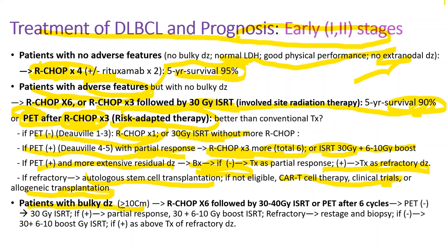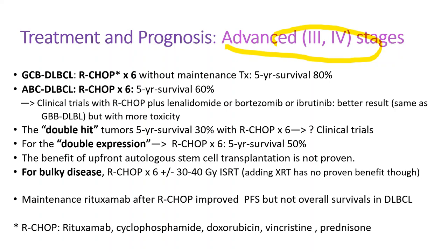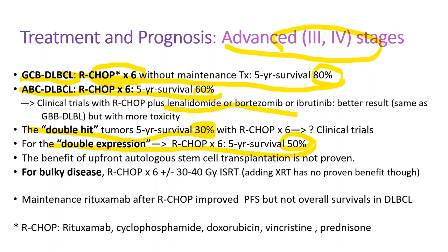For patients with bulky disease — tumor size over 10 cm — R-CHOP for six cycles followed by radiation therapy is used, or risk-adaptive therapy with PET assessment after six cycles. For advanced stages, R-CHOP for six cycles is the standard. Prognosis differs by subtype: germinal center B cell subtype has a five-year survival of 80%, activated B cell subtype 60%, double-hit tumors only 30%, and double-expression about 50%. Adding drugs like lenalidomide, bortezomib, or ibrutinib may yield better results but with more toxicity. Upfront autologous stem cell transplantation is not proven for this tumor. Maintenance rituximab after R-CHOP improved disease-free survival but not overall survival.